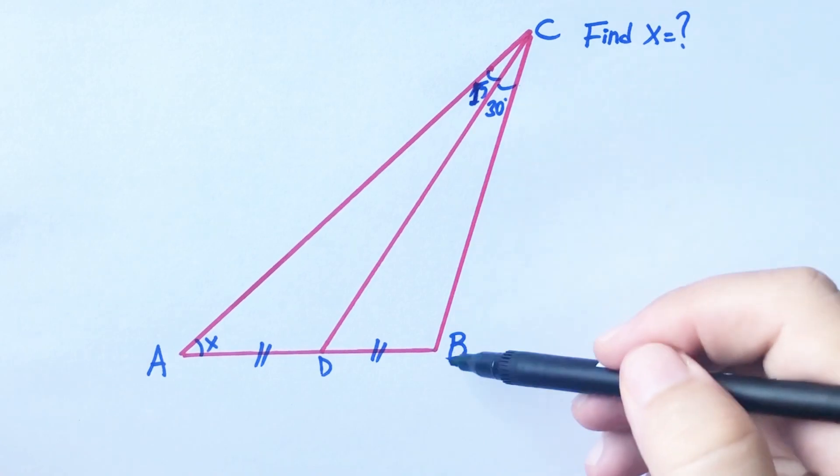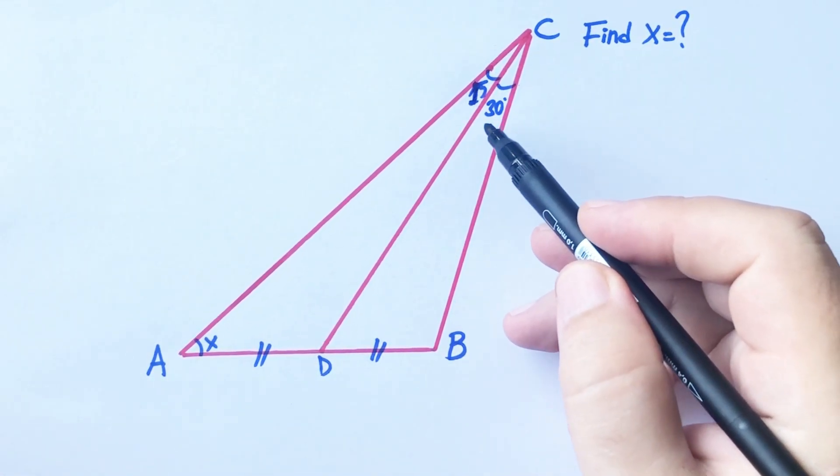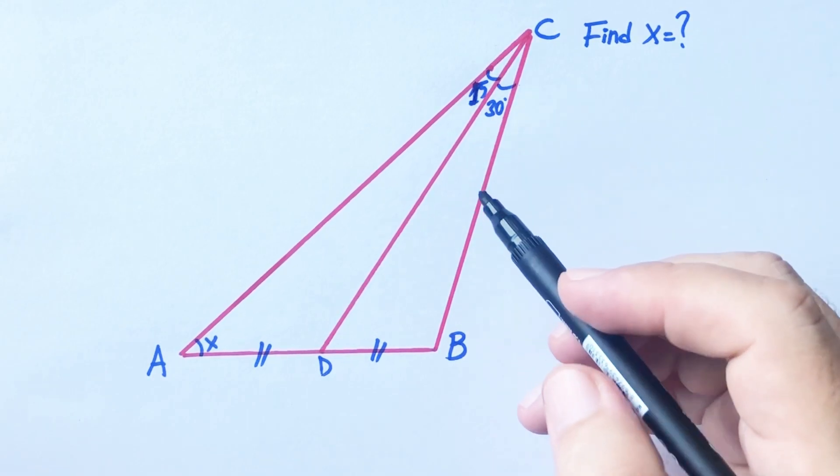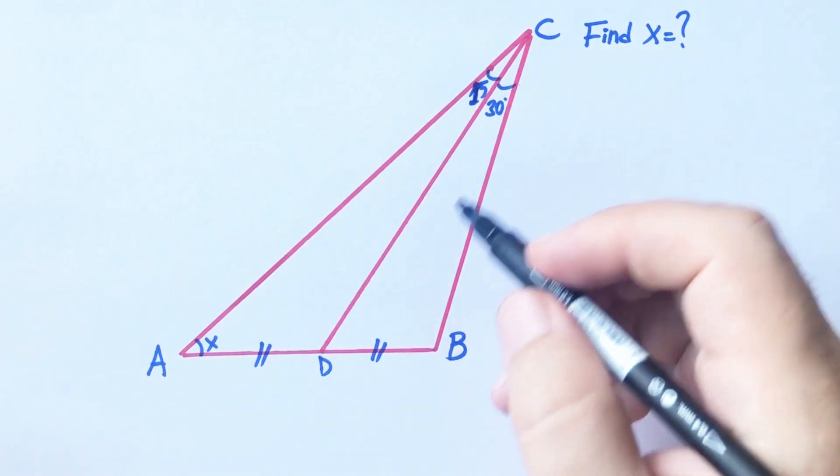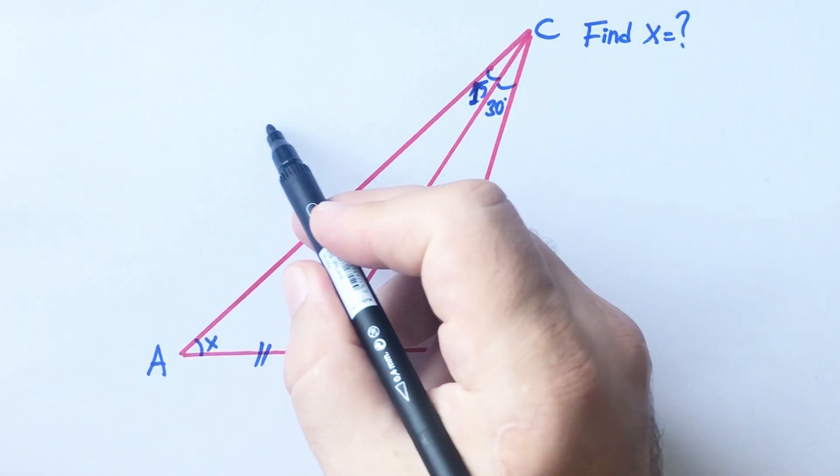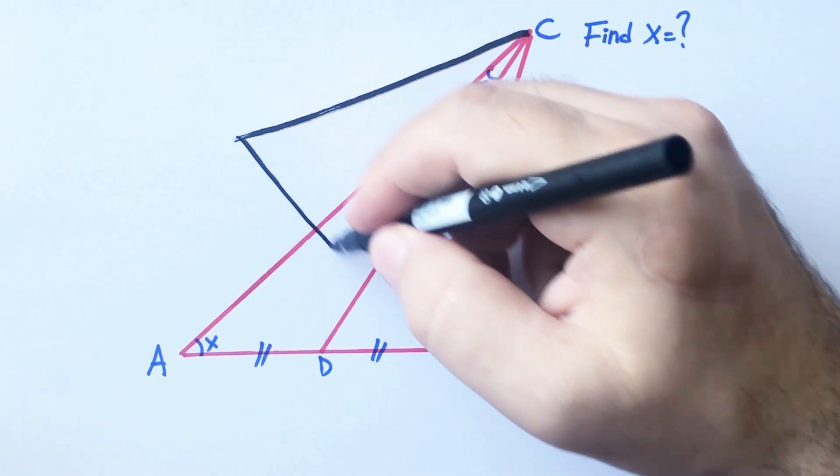If we create an equilateral triangle with sides equal to BC, DC will be a bisector line. So let's draw here an equilateral triangle.